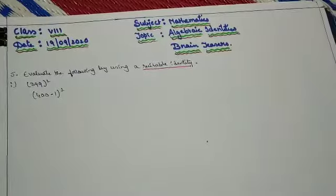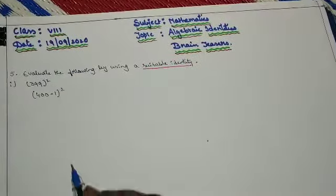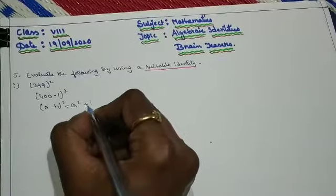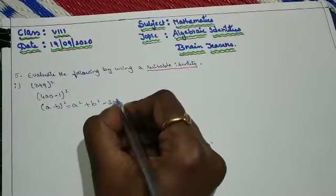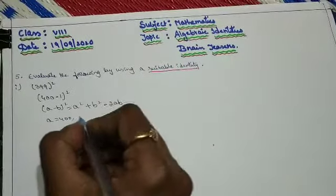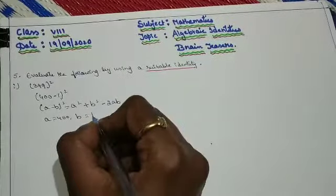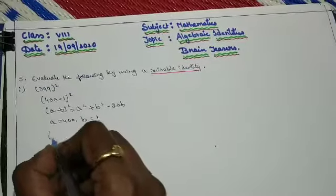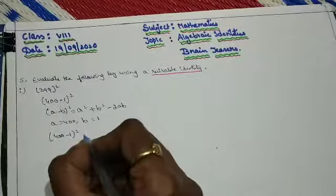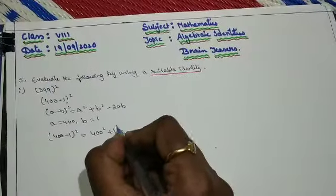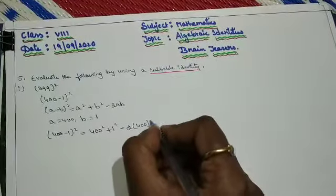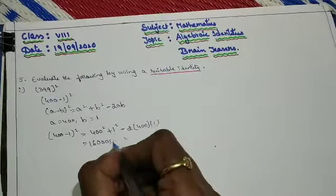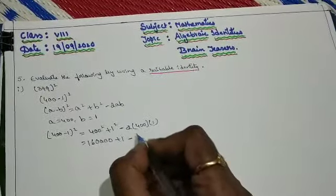Can you suggest which identity can be used here? Yes, a minus b whole square. So a minus b whole square is equal to a square plus b square minus 2ab. By comparing, the value of a is 400 and the value of b is 1, because we have like signs here. Then substitute these values of a and b in the identity. We get 400 minus 1 whole square equal to 400 square plus 1 square minus 2 into 400 into 1.